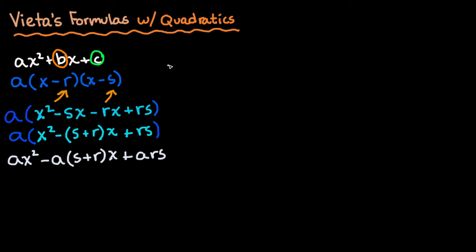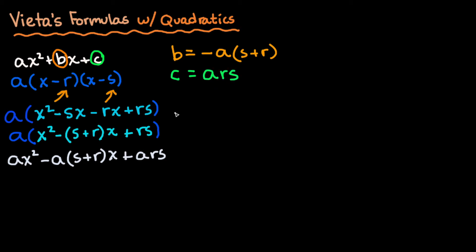We can now write Vieta's formulas. The coefficient b is equal to negative a times (s plus r), so b = −a(r + s). And c is equal to ars. We've now represented this quadratic in terms of the leading coefficient and the roots.